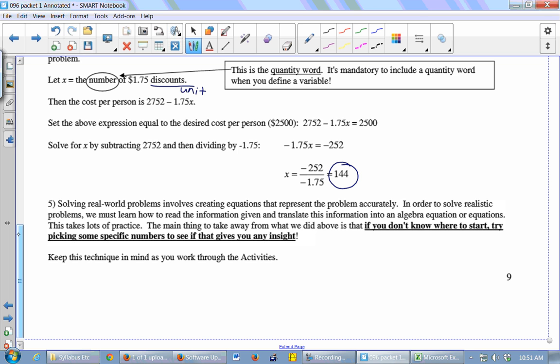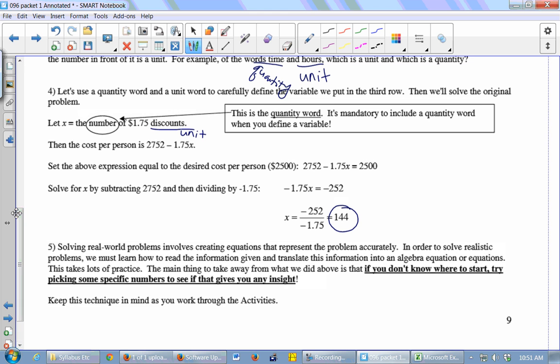Solving real world problems. [Student question]: I wanted to make sure that I started when I did that - I did $2,753 minus $2,500 over $1.75. That's fine. You basically did all the work of solving the equation in your head, which is okay. It's fine.